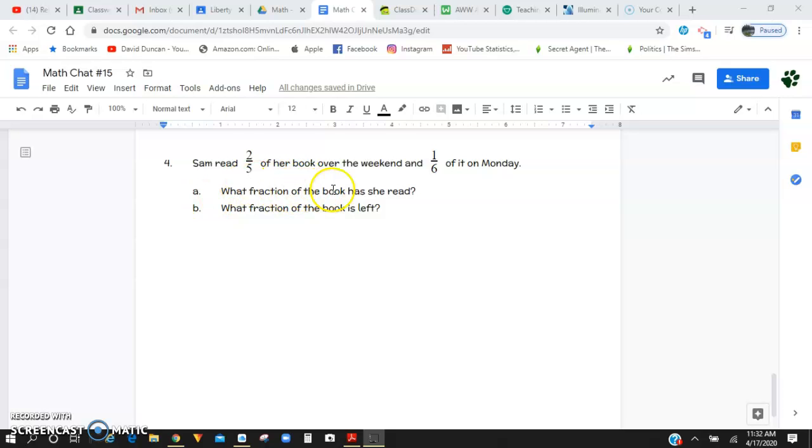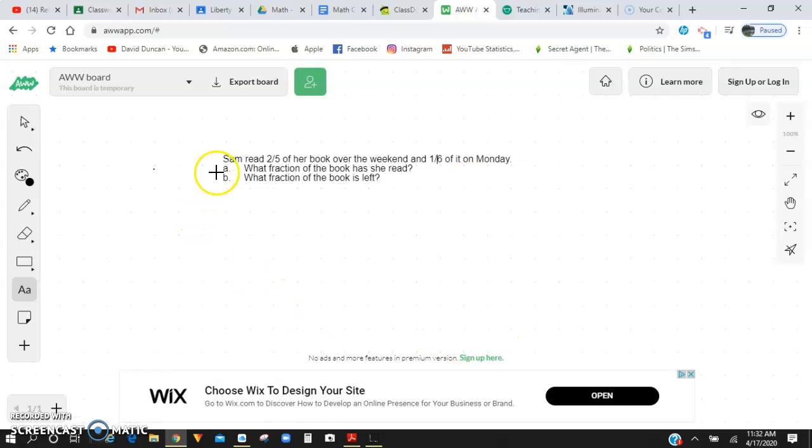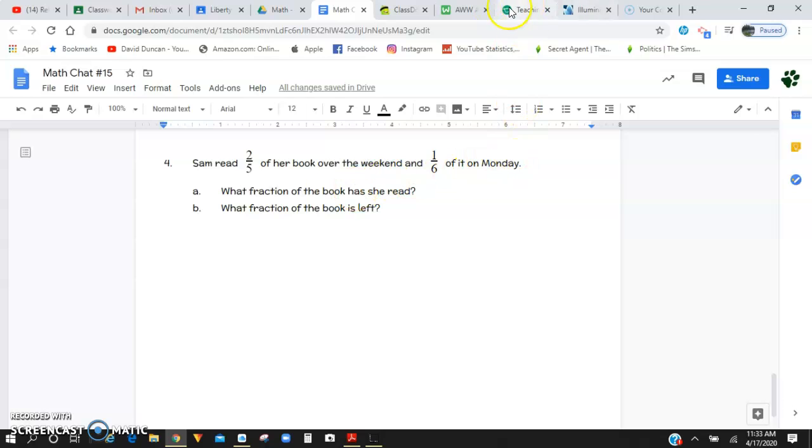So I copy and pasted this problem over here onto my whiteboard and it says right here, Sam read two fifths of her book over the weekend and one sixth of it on Monday. Again, same problem right here.